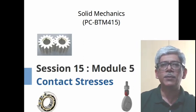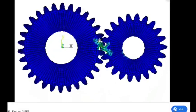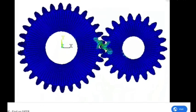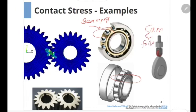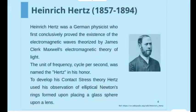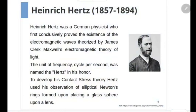Let us begin with some situations which need evaluation of contact stresses. The first example is that of two gears transmitting power — the gear teeth are constantly subjected to contact stresses. Similarly, in the case of bearings, the rolling elements — spherical balls or cylindrical rollers — are subjected to contact stresses. In cam and followers, the touching surfaces are also subjected to contact stresses. The fundamental work in contact stresses was done by Heinrich Hertz, a German physicist well known for his work in electromagnetic waves. He developed his theory based on experiments of a glass sphere contacting on a lens.